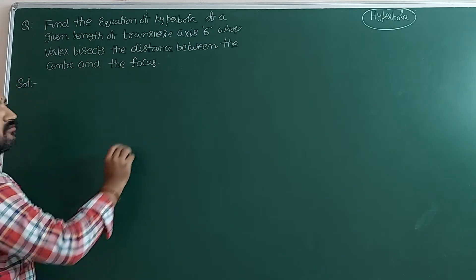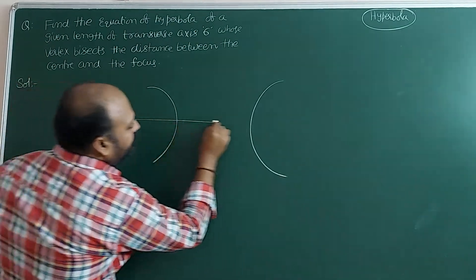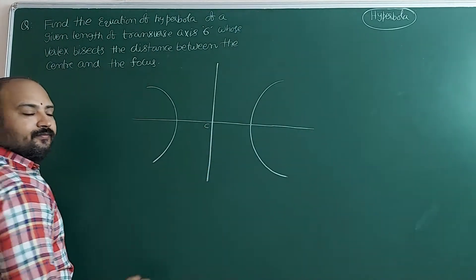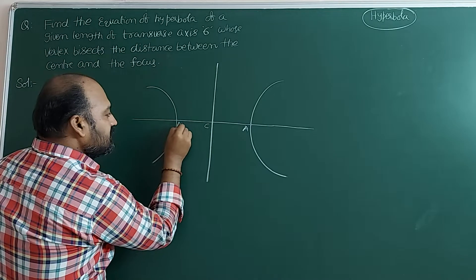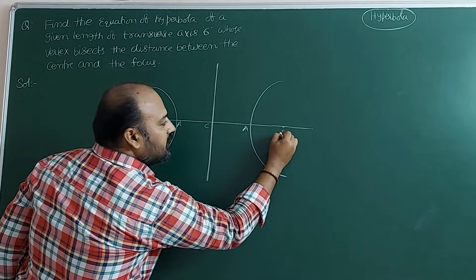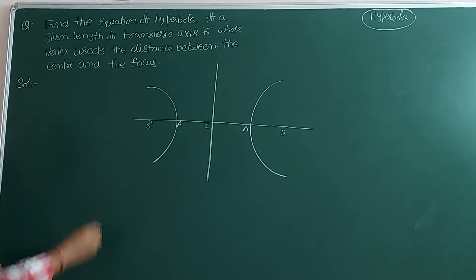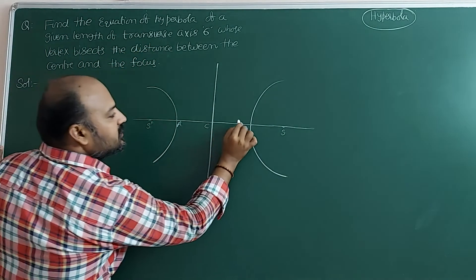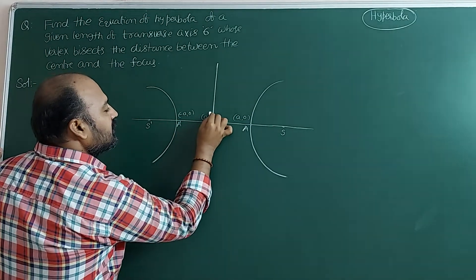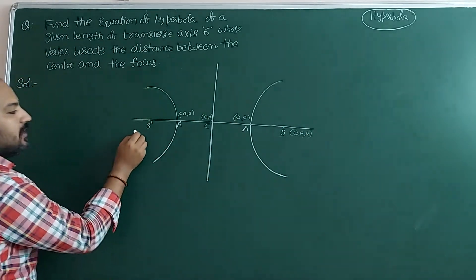Here is the rough diagram of the hyperbola. Center of the hyperbola, vertices of the hyperbola — that means the length of transverse axis. These are the foci S and S dash. Given that, we know the coordinates: vertex is (a, 0), this is (-a, 0), center is (0, 0). This is (ae, 0), and this is (-ae, 0).